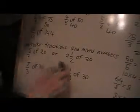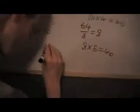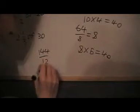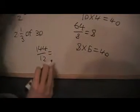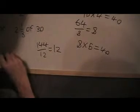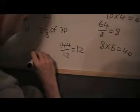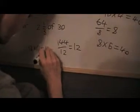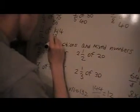11 twelfths of 144. I divide 144 by 12, I get 12. I times that by 11, that's 132. So the answer to this one here is 132.